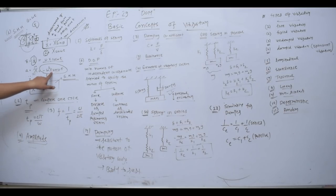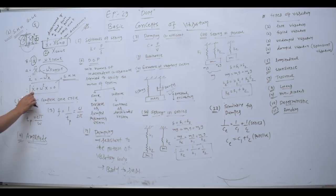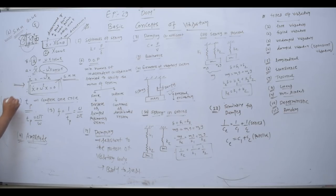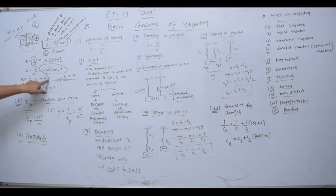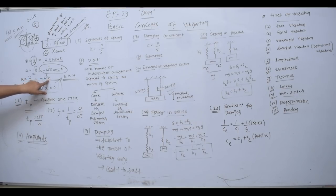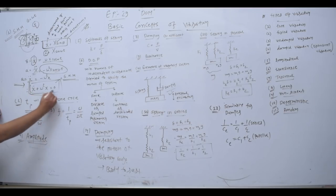So acceleration is ẍ = −ω²x, which means ẍ + ω²x = 0. This equation is called the basic equation of simple harmonic motion. Here, acceleration is directly proportional to the displacement from the mean position, and directed towards the mean position. This motion is called simple harmonic motion, and you have to remember this fundamental equation.